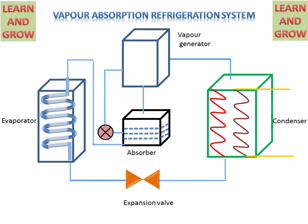The evaporator is connected to the absorber with the help of a pipe. Now we will see the working of the vapor absorption refrigeration system. In the absorber tank, there will be ammonia and water. Ammonia will work as a refrigerant and water will be used as an absorbent.